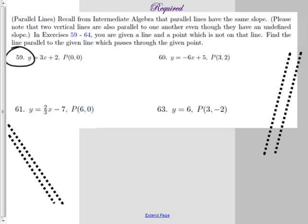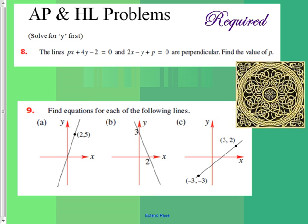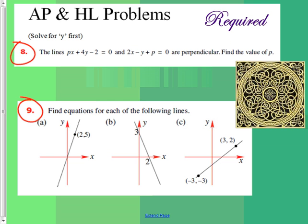Circle problem 59 — you can skip the rest on that page. Circle problem 65 — skip the rest on that page. For the AP and HL problems, do the two on that page; they're actually easy — you know two points, find the equation. Number 10 is a challenge question only, don't worry about it if you don't have time. This is a tough assignment but I gave you a bunch of time for the toughest part. That's all I have for today.